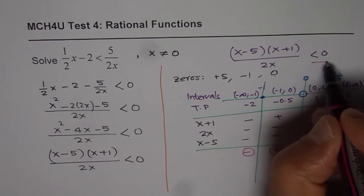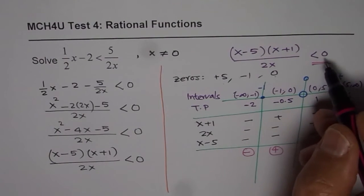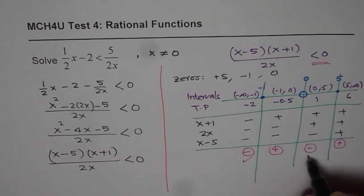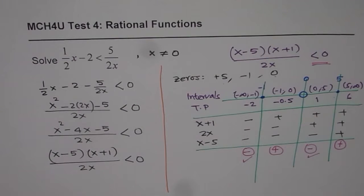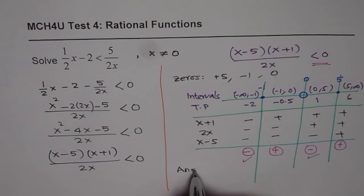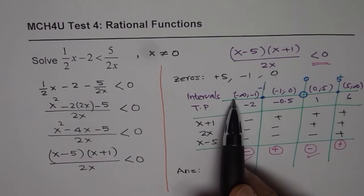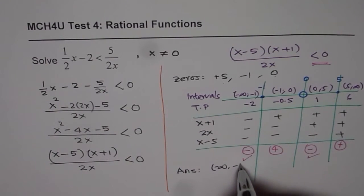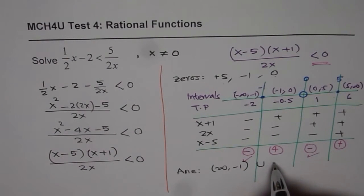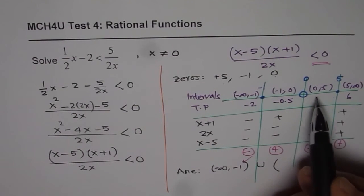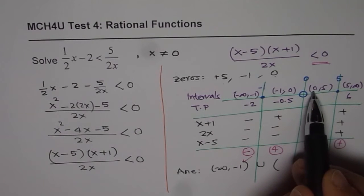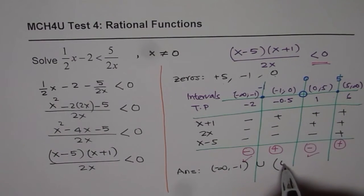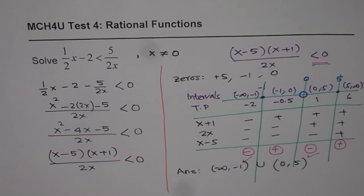We are looking for less than 0. That means negative. So, these intervals are the solution for the given situation. We can now write down the answer as from minus infinity to minus 1 union 0 to 5.